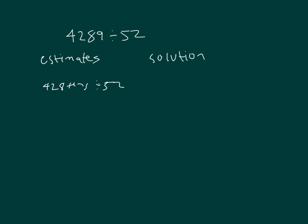When we look at our estimate, we're dividing by fifty. And in this case, we would look at four hundred tens to divide by fifty. Four hundred tens divided by fifty is eight tens. So our solution is eight tens, and that can be part of our solution as we're working through this problem.